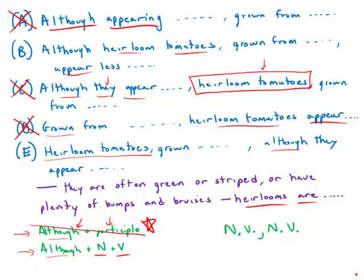And then although followed by its own noun and verb, but the noun heirloom tomatoes is left without a verb. So we have a subject without a verb floating around in the sentence. So this is grammatically incorrect also.